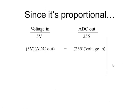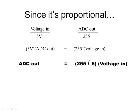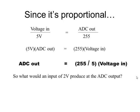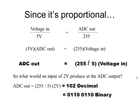So if we do a little math on that — you know how to solve our proportion: you cross-multiply and set the two sides equal to each other. Do a little more algebra. This is why we make you take math class. We can see that the analog-to-digital converter output is going to be equal to 255 divided by 5, times the voltage in. So our signal was 2 volts — what is the digital output, the binary output, going to be?